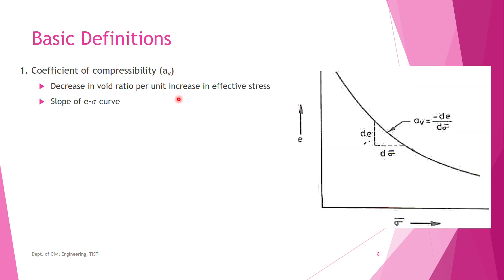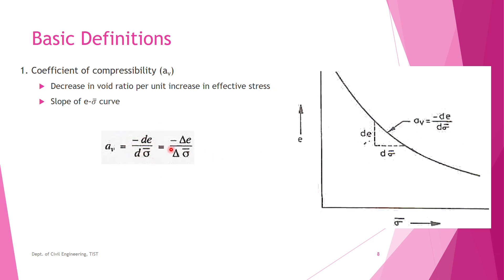The first basic term is coefficient of compressibility, Av. It is the decrease in void ratio per unit increase in effective stress, or the slope at a particular point on the σ̄ versus e curve. The equation is: Av = −de/dσ̄, or in incremental form, Av = −Δe/Δσ̄. So Av is the slope of the e–σ̄ curve.